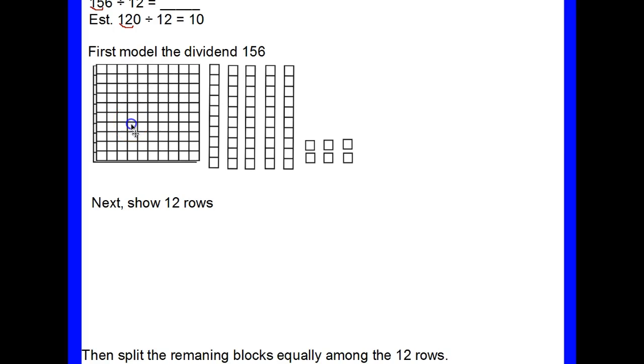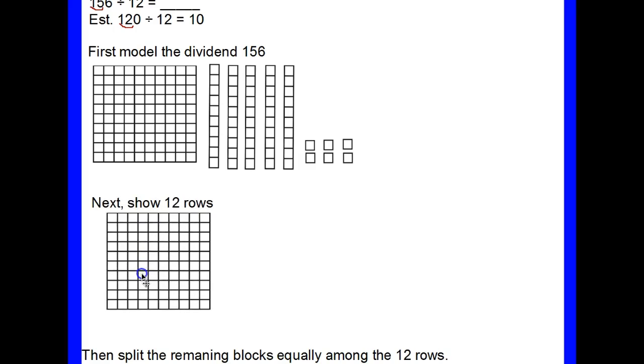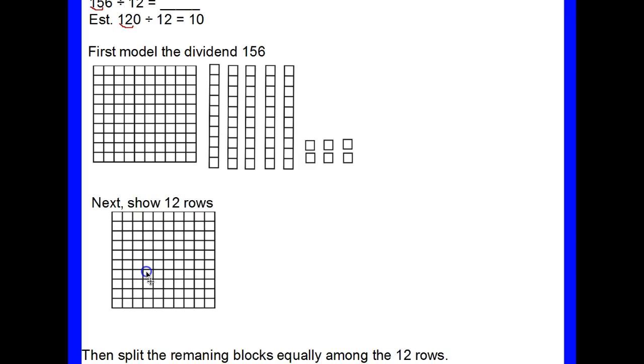Pay attention to this part in particular. The way that I'm going to show my rows is by using my base 10. So this is my flat. My flat represents 10 rows, so we already have 10 rows going across. If we look horizontally, we know that this is 10 rows, but I want to show 12 rows to represent my divisor.